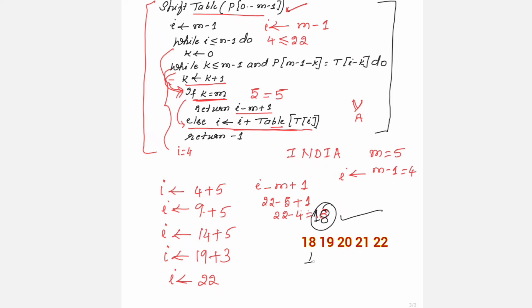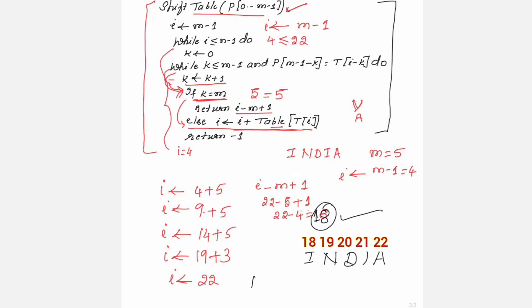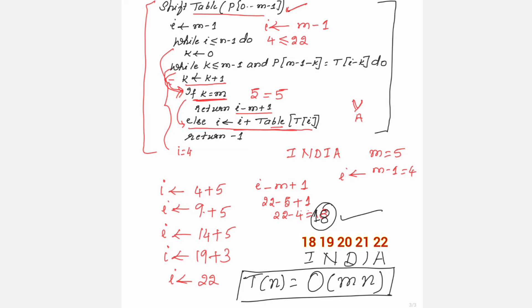The time complexity of the Horspool matching algorithm is O(m × n), where m is the length of the pattern and n is the length of the text string.